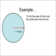Here's an example. Suppose we had a circle of radius 6. To find the area of the circle, you first write the formula down, area equals pi times r squared.